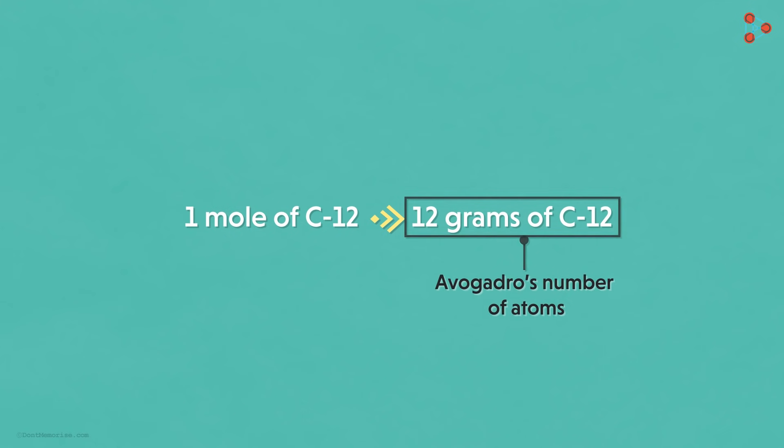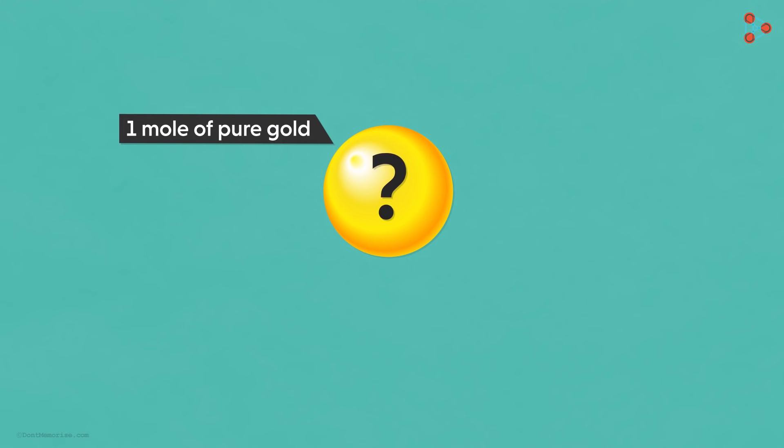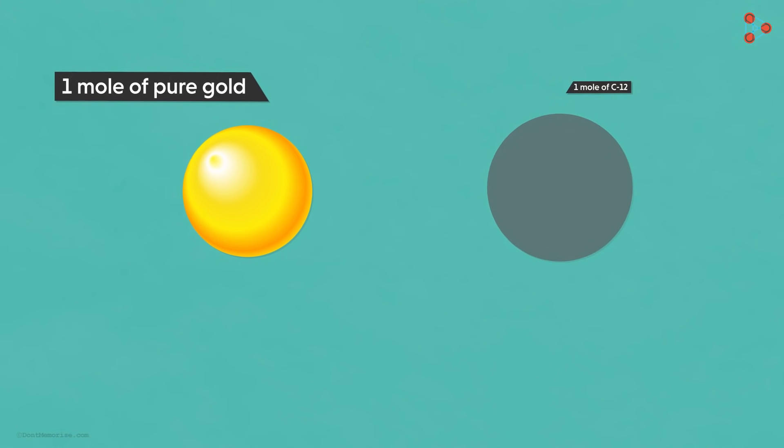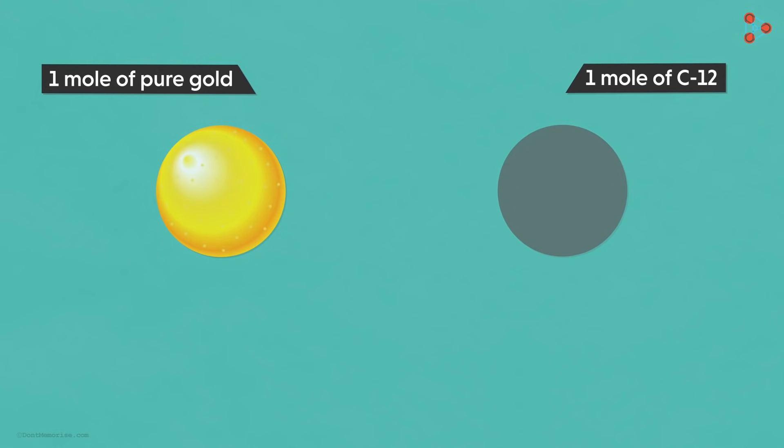What will be the mass of 1 mole of pure gold? Will it be 12 grams? The answer is no. It will not be 12 grams. Note that in both cases, the number of atoms is the same, but the mass of an atom of gold is different from the mass of an atom of carbon-12.